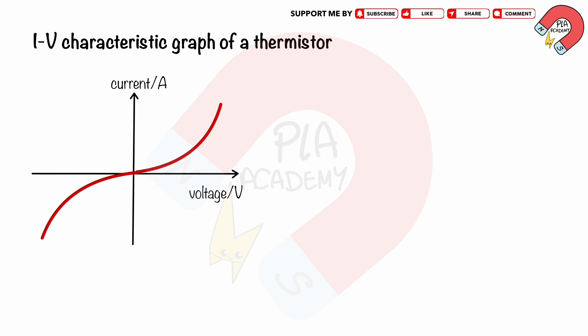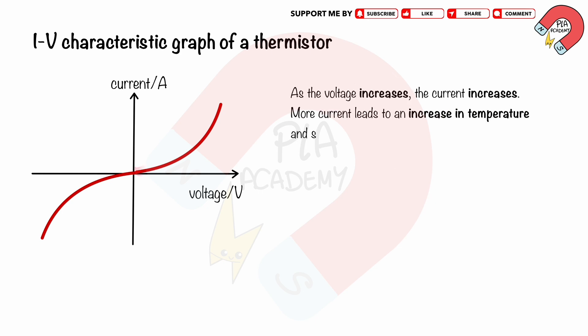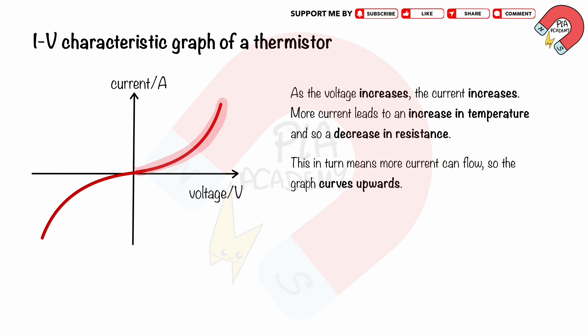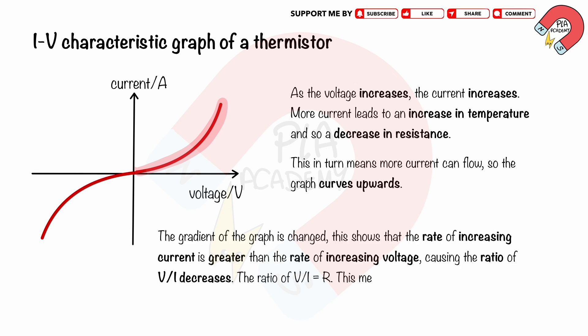IV characteristic graph of a thermistor. As the voltage increases, the current increases. More current leads to an increase in temperature and so a decrease in resistance. This in turn means more current can flow, so the graph curves upwards. The gradient of the graph changes, showing that the rate of increasing current is greater than the rate of increasing voltage, causing the ratio V over I to decrease. Since V over I is R, this means that the resistance of the thermistor decreases.